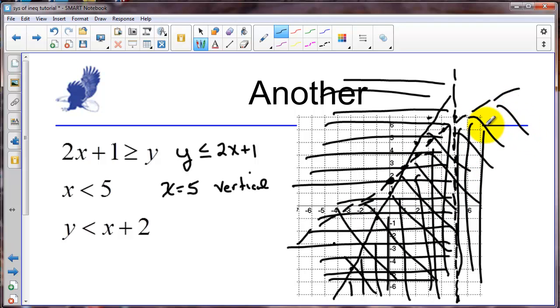Oops that went over the line there. Now we are looking for where we have the cross hatch in all three ways. So our solutions. Let me outline in red so we can see.